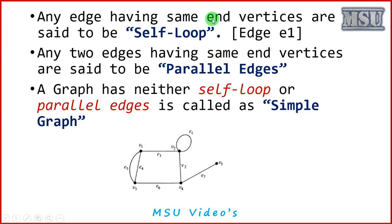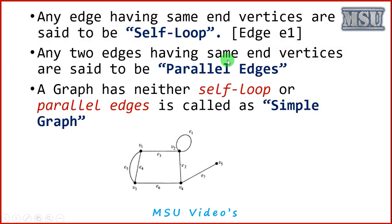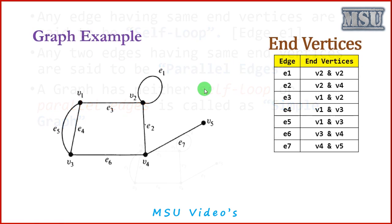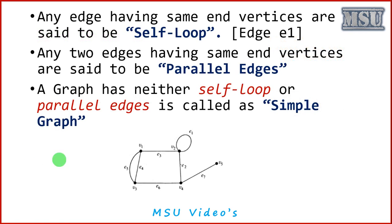Any edge having the same end vertices is said to be a self-loop. As discussed, here E1 is a self-loop because its end vertices are the same. Any two edges having the same end vertices are said to be parallel edges. Here, edges E4 and E5 have the same end vertices — E4 goes from V1 to V3 and E5 also goes from V1 to V3, so E4 and E5 are called parallel edges.